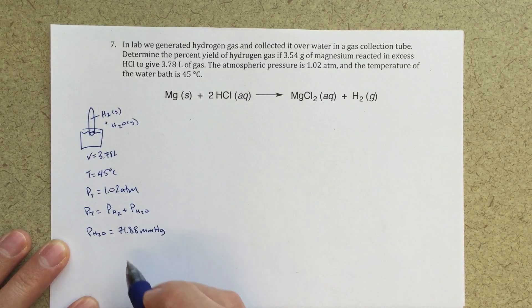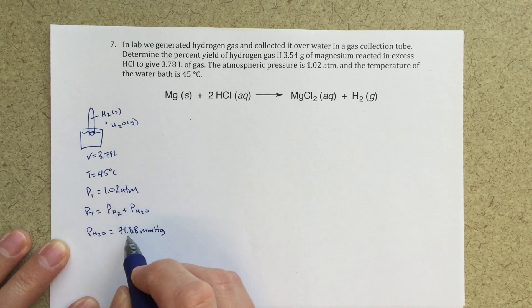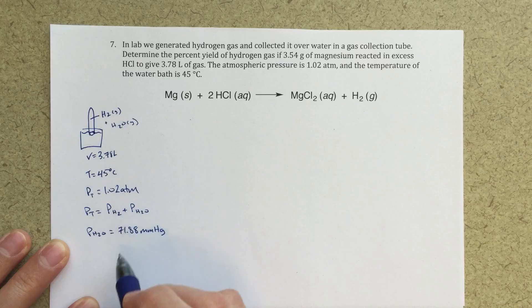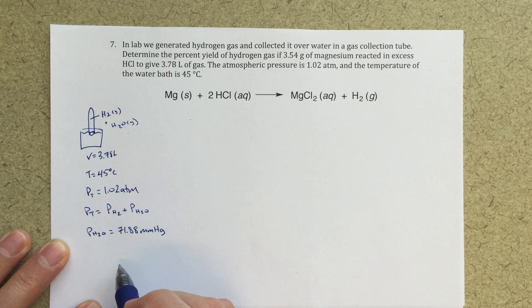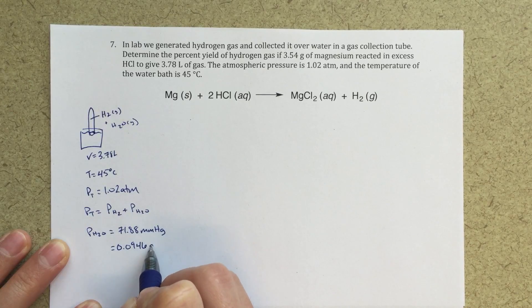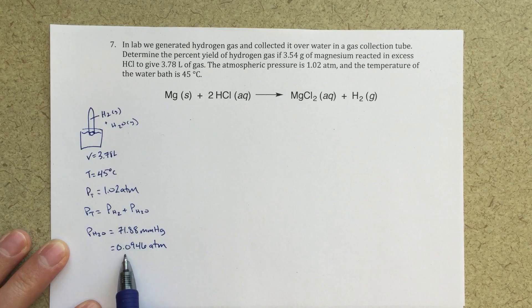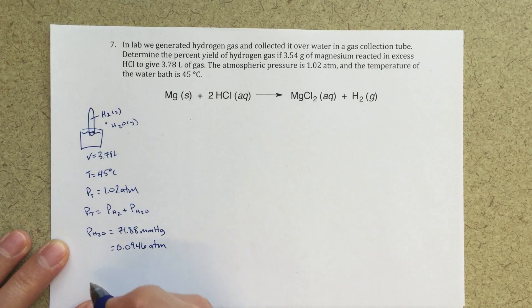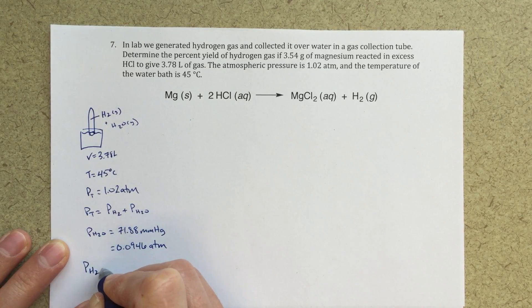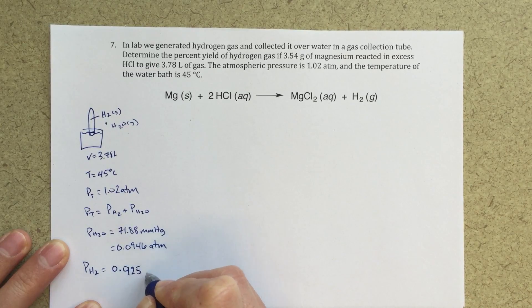So we need to take that into account. So if I wanted to figure out my pH2, that's going to be P total minus my P from water. So I'm going to convert this to atmospheres. That's 0.0946 atmospheres. So 71.88 millimeters of mercury is 0.0946 atmospheres.